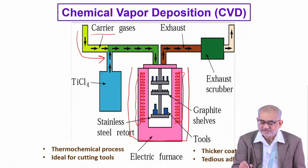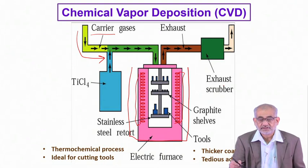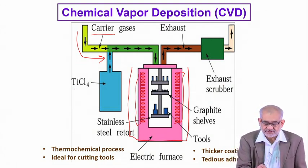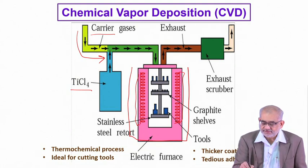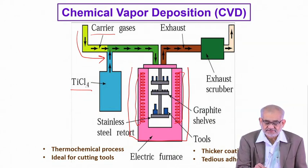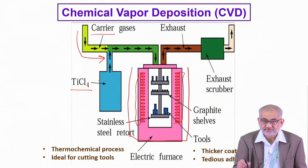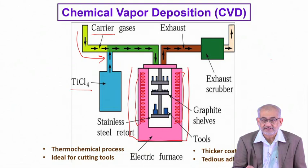Whatever byproduct gases are produced, they come out and are treated in an exhaust chamber. For example, in this particular case when we are using titanium tetrachloride (TiCl₄) as a precursor gas with hydrogen as a carrier gas, they mix together and in the reaction chamber at temperature they dissociate. Hydrogen reacts with TiCl₄ and produces hydrochloric acid vapour. That vapour goes into a scrubber chamber which is showered with water, and then the acid is collected and given the requisite treatment before disposal.